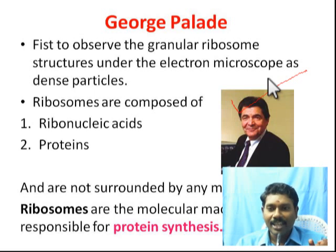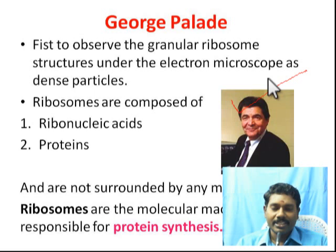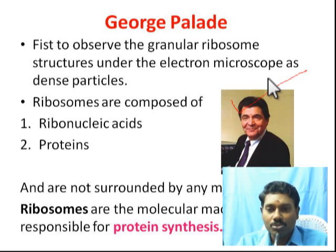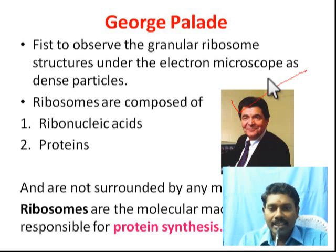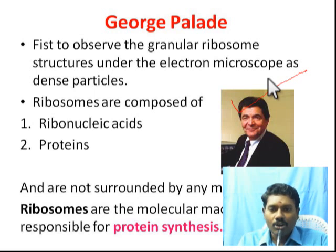Ribosomes are composed of two things: one is RNA (ribonucleic acids) and the other is protein. These ribosomes cannot come under the endomembrane system, because they do not have any membrane.